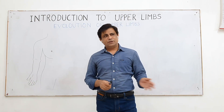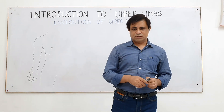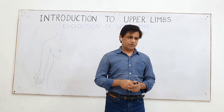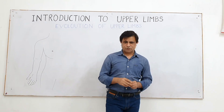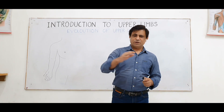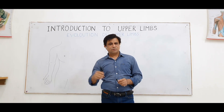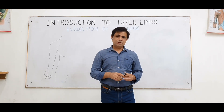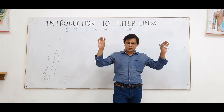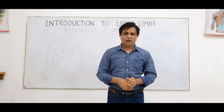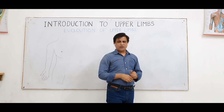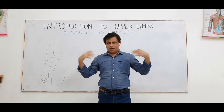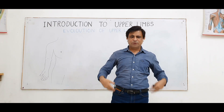Then came the arboreals — like monkeys — jumping from one branch to another. These animals completely suspend their body with their arms, catching hold of branches of trees. Gradually the forelimbs, the upper limbs, lengthened compared to the lower limbs.